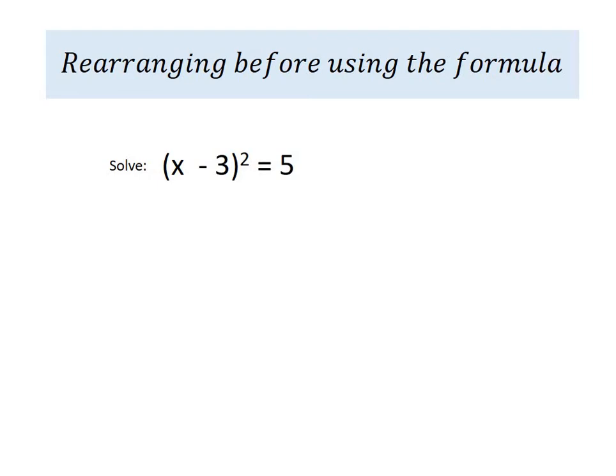In this example, it's written a little bit strange. So I need to rearrange it before I start using the formula. So the first thing I'm going to do is multiply out the brackets. x minus 3 squared means x minus 3 multiplied by itself. So x times x is x squared. x times negative 3 is negative 3x. Negative 3 times x is negative 3x. And negative 3 times negative 3 is 9. So when I've multiplied this bit out here, I get x squared minus 6x plus 9. And that is equal to 5.